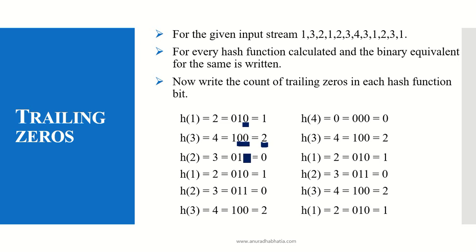The most important thing that needs to be considered is when my value for the input stream is h(4), you will see that my mod value is 0. As my mod value is 0, my binary equivalent is also 0. But we have to neglect this; otherwise we will have trailing zeros as 3. Since my output is 0 and my binary bit is 0, my trailing zeros are also considered as 0. This is the most important thing which needs to be considered while solving the FM algorithm.